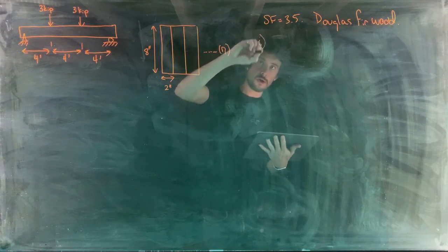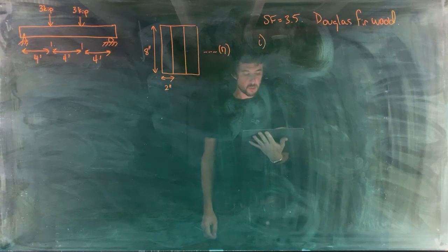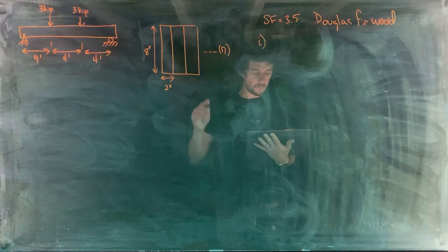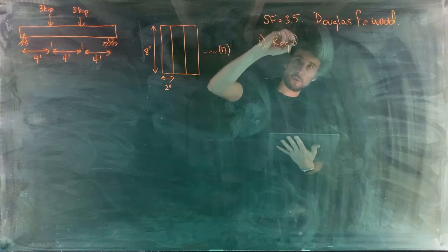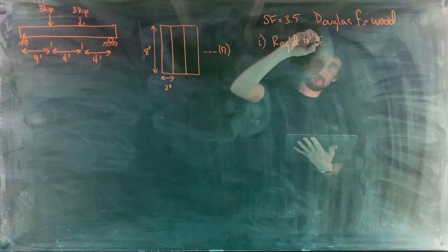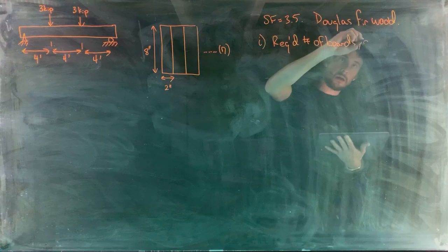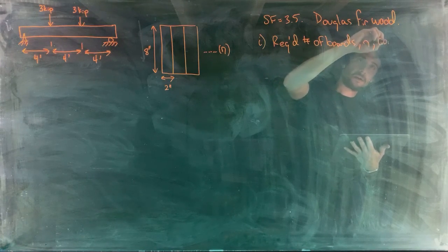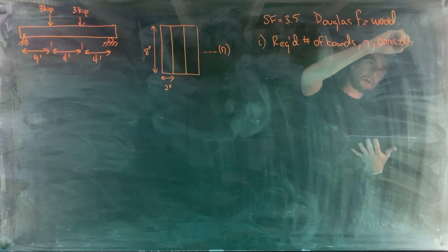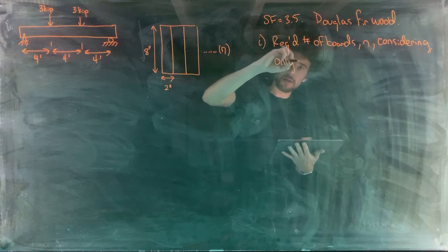Part one: considering only bending, determine the required number of boards needed for each beam.